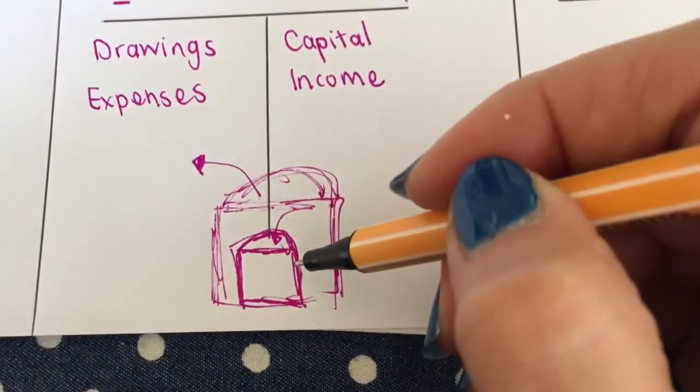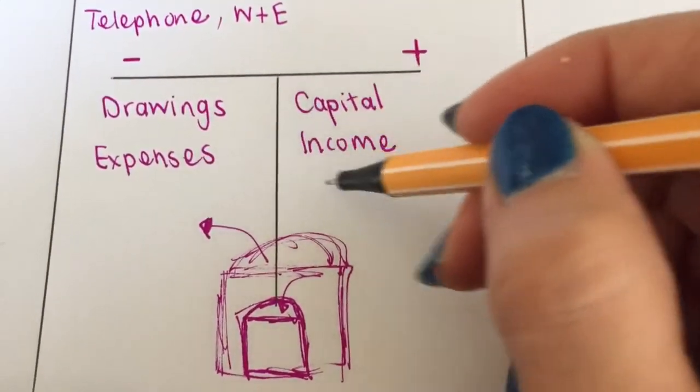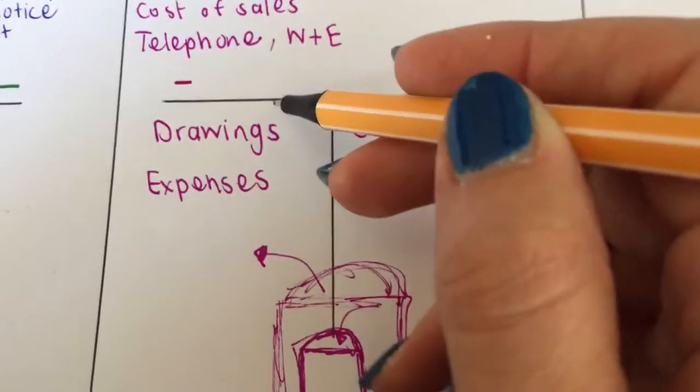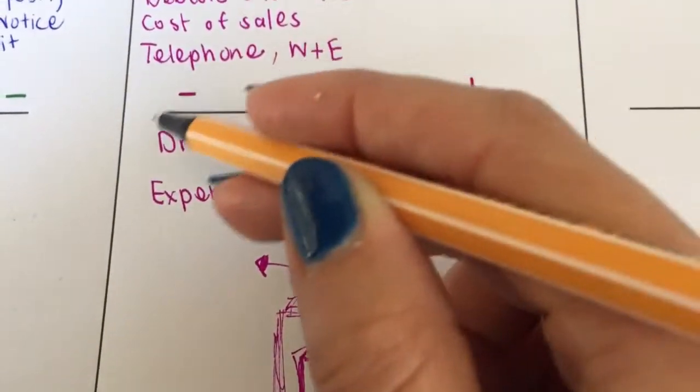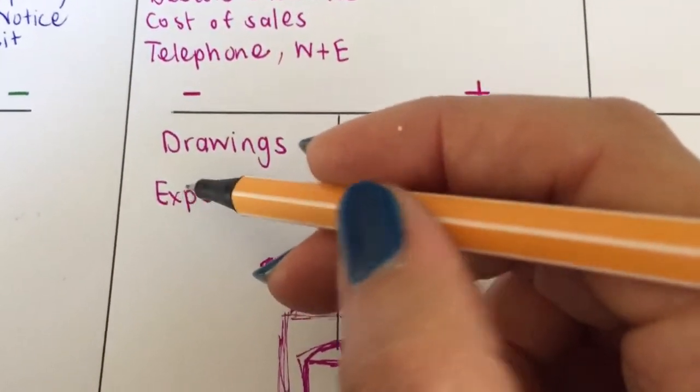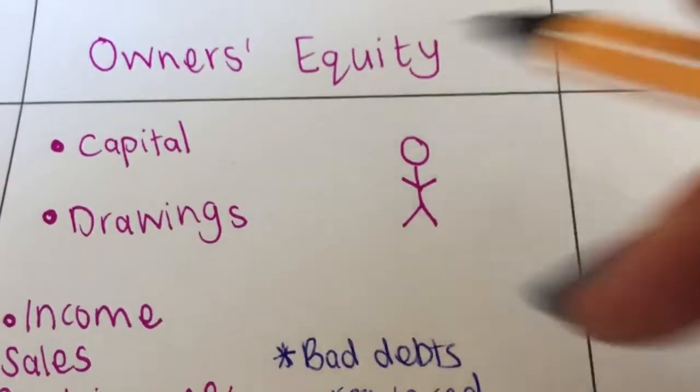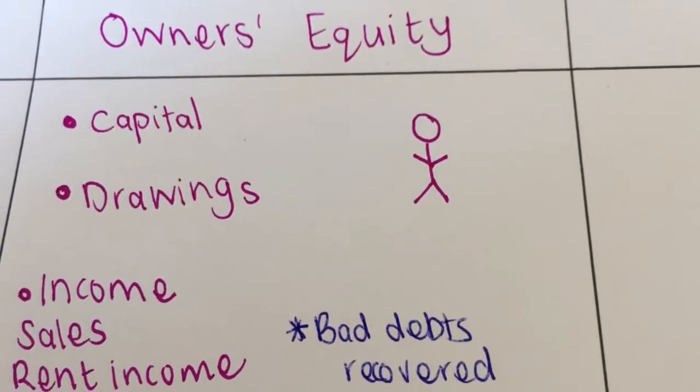Owner's equity. So think of it as your bin. Will my bin become bigger? Yes, with those two. Or will my bin become smaller if I pay or give money away? Those two. And whatever is in the bin will then belong to the owner, which is owner's equity.